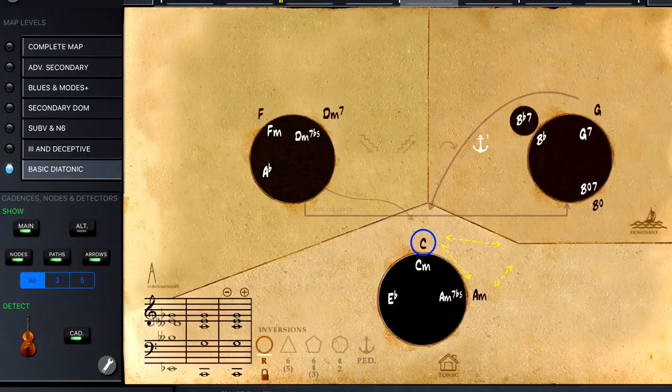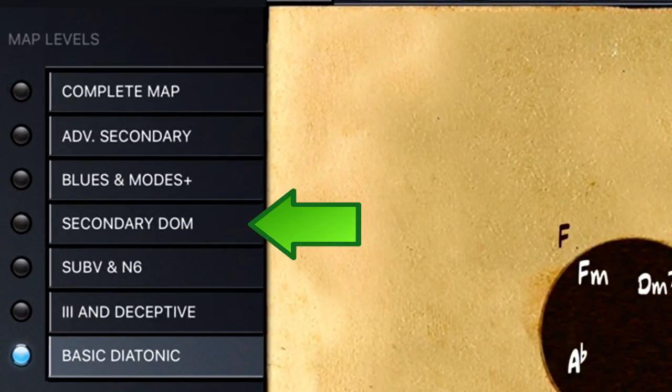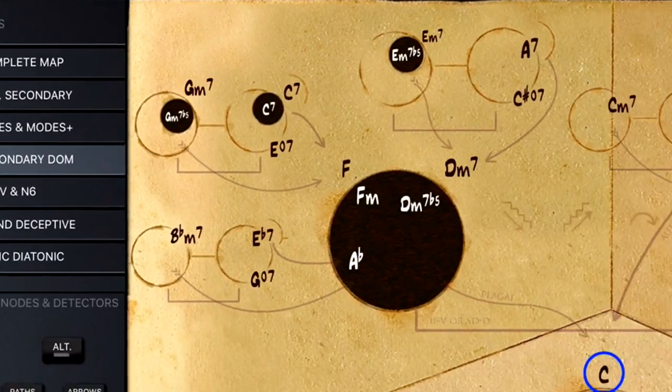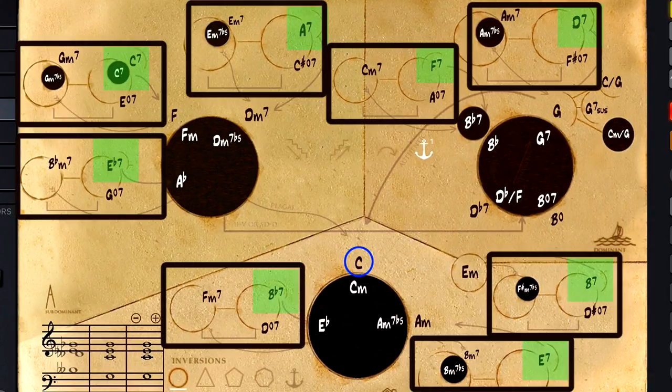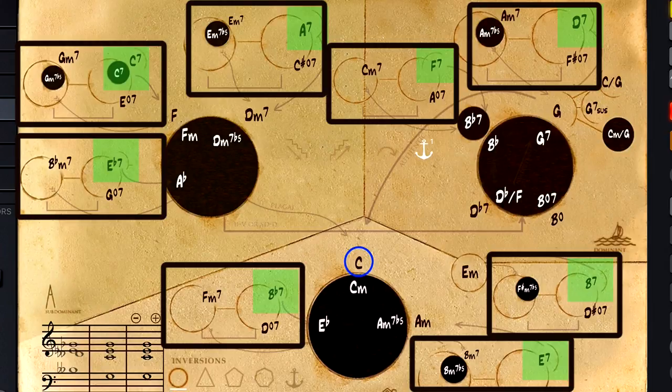So here's our map in its most basic form. I have to go up about four levels to expose all my secondary dominance and secondary functions because we're going to have to talk about that too to sort of explain what a secondary dominant is.